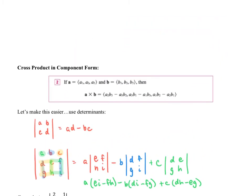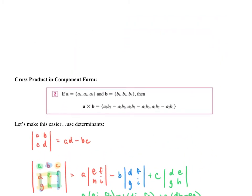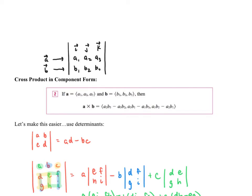Now the way we do this with vectors is: when we set up our matrix for the cross product, we set up the first row as the unit vectors i, j, and k. The next row is going to be our first vector A, so we put A₁, A₂, A₃. Then the third row is going to be vector B, which is B₁, B₂, B₃.